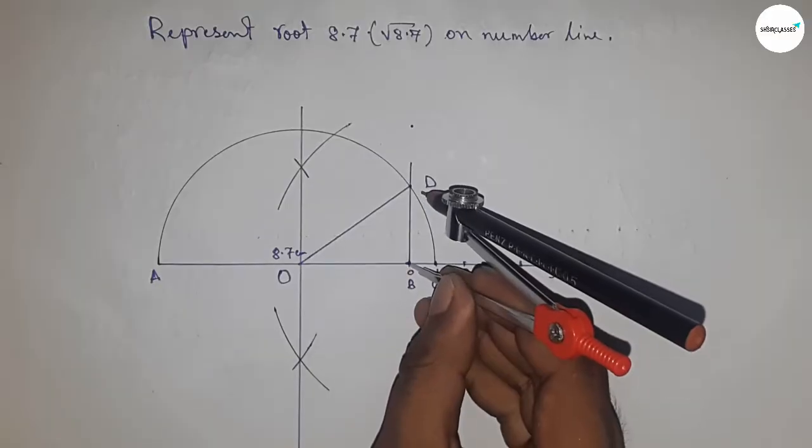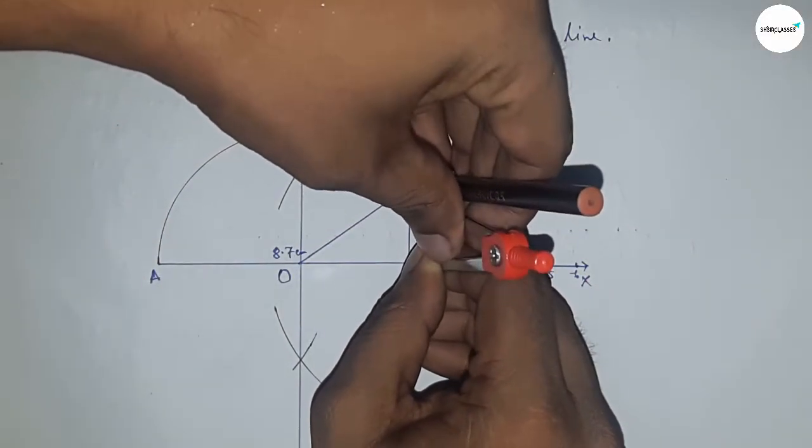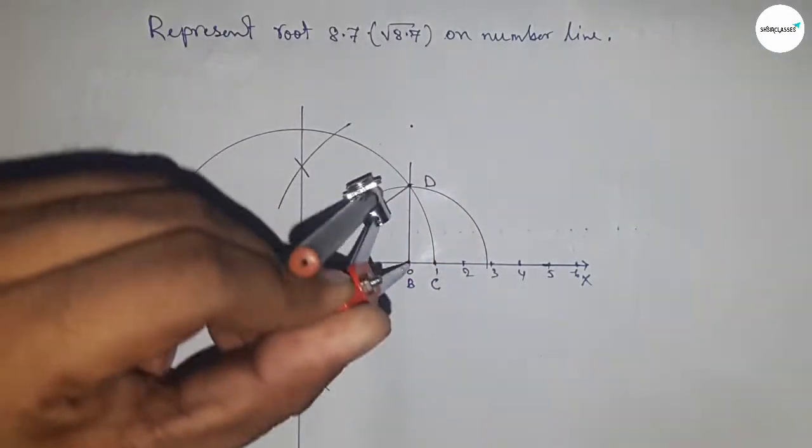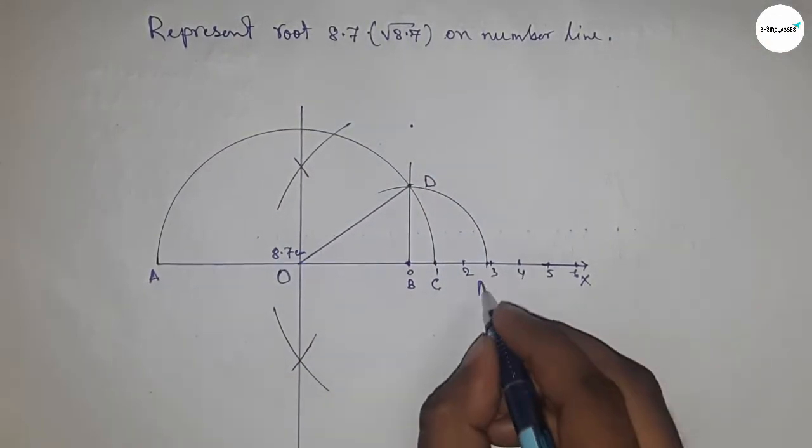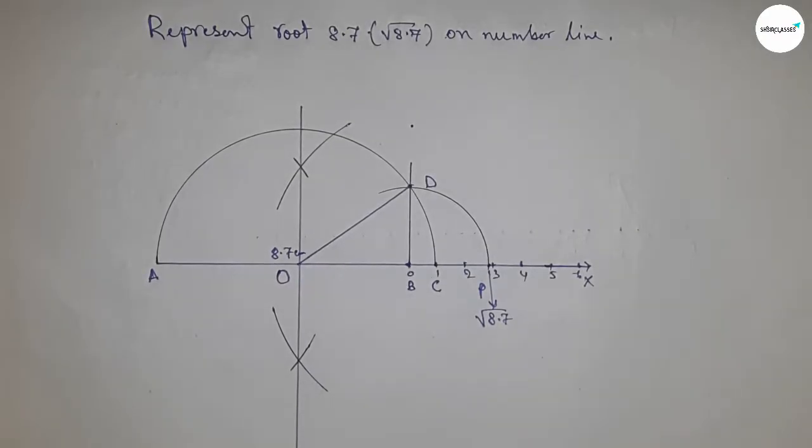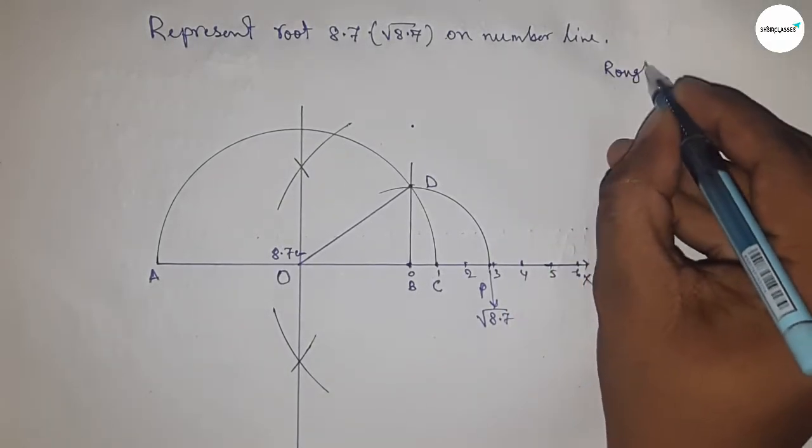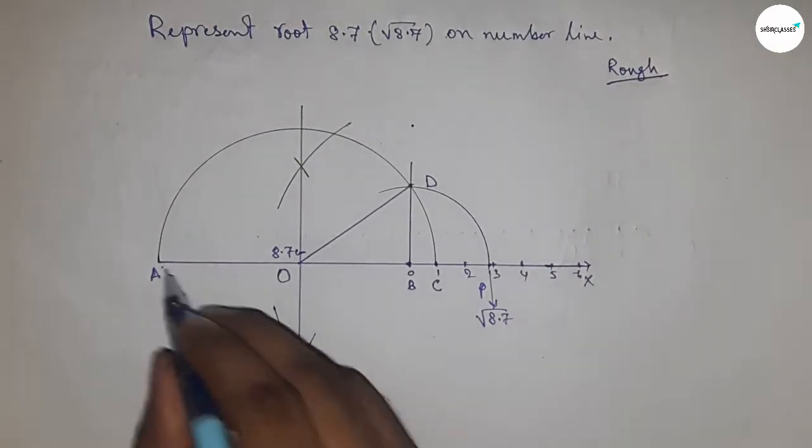Take the distance BD with a compass to draw an arc which meets the number line at point P. This is the representation of root 8.7 on the number line. Now let's discuss the calculation.